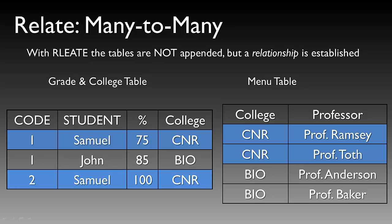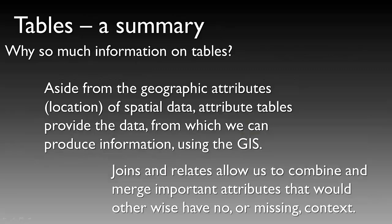Another example of a relate — where tables are not appended but a relationship is established — uses a many-to-many relationship. On the left, we have a grade and college table with code, student, and college columns. On the right, we have a menu table with college and professor. The common field for the relate is college, and you can have many students with many different professors within the same college.